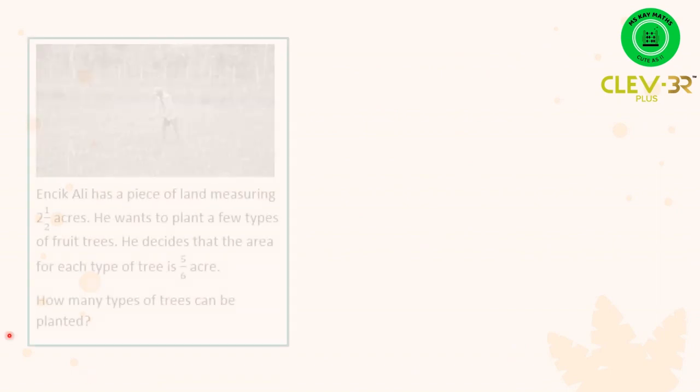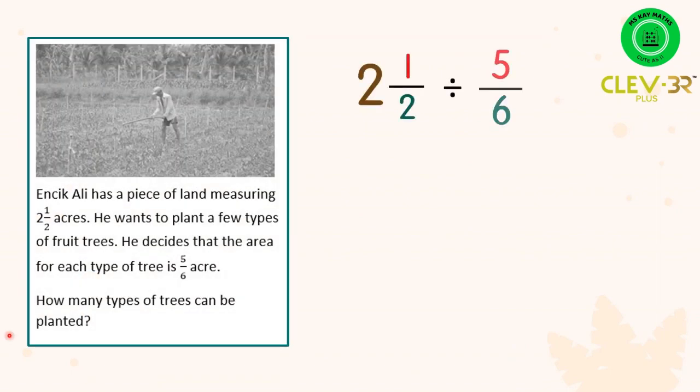For the first question we have 2 1/2 divided by 5/6. So the first thing that you need to do is to convert the mixed numbers into improper fractions. Kita tukarkan nombor bercampur kepada pecahan tak wajar.